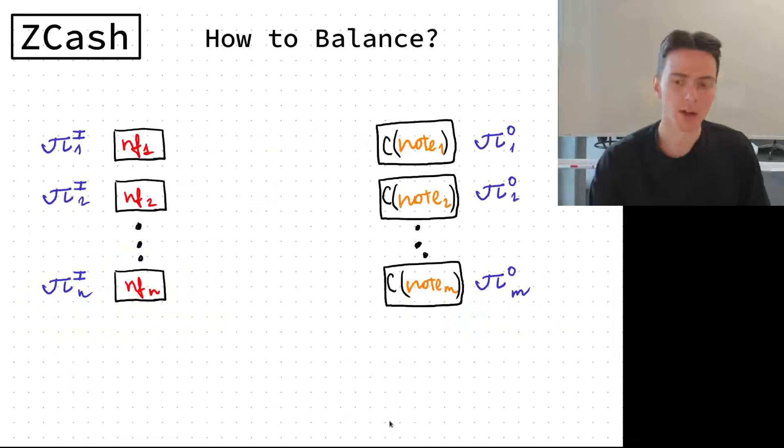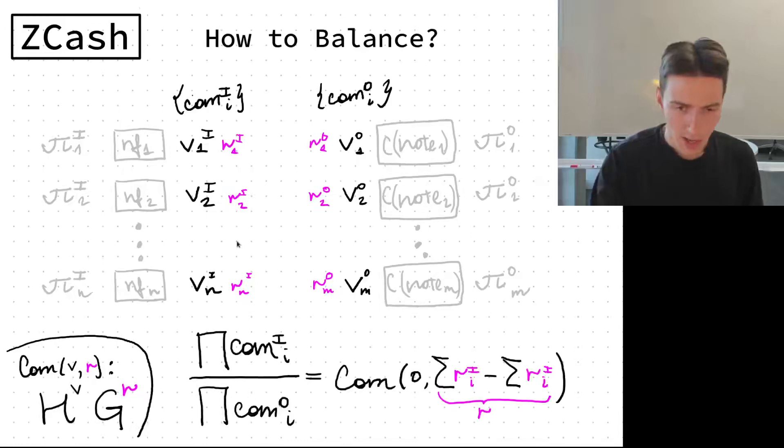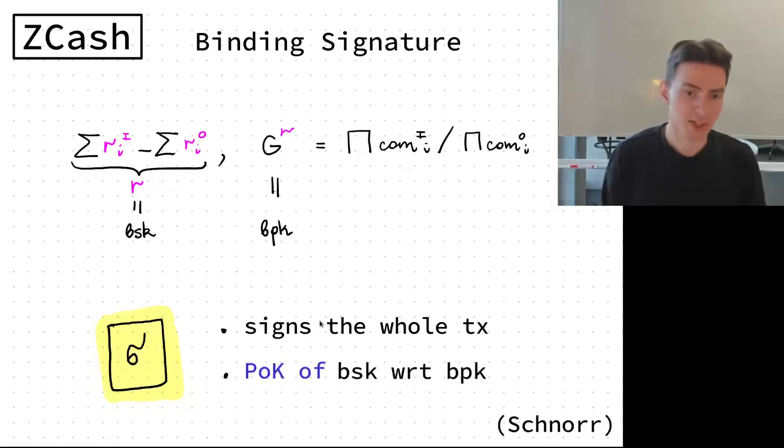In Zcash it's solved by adding homomorphic commitments. Each node contains a value and randomness on each side, and then the commitment is just h to the value and g to the r. If you have commitments to all these values on the left and the right, if you multiply everything on the left and divide everything on the right, you will get a commitment to zero if everything balances, commitment to zero with this joint randomness r.